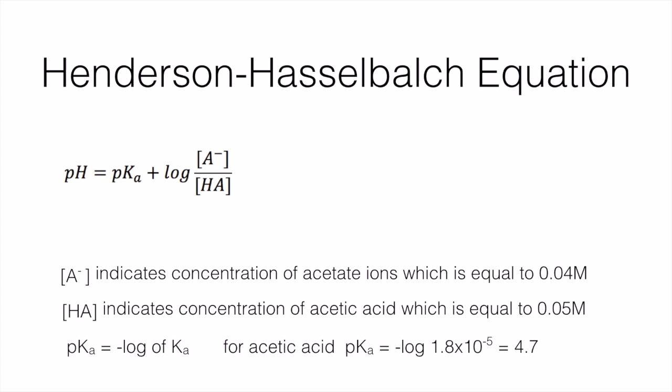pKa equals negative log Ka. It can be calculated by an equation very similar to the equation for pH. pH equals negative log hydrogen ions. Similarly, you replace the hydrogen ions by Ka and you will get pKa equals negative log Ka. In this case, the value of Ka is 1.8 times 10 to the power of negative 5. And if you solve this, the pKa equals 4.7.